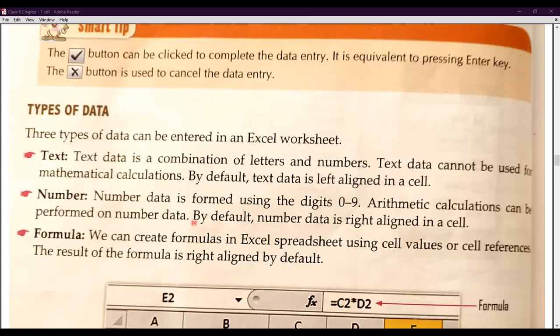Now we will understand number data. Number data is formed using the digits 0 to 9. Arithmetic calculations — that means mathematical calculations — can be performed on number data. By default, number data is right-aligned in a cell. So if someone asks where number data type will start, your answer will be: right-aligned.